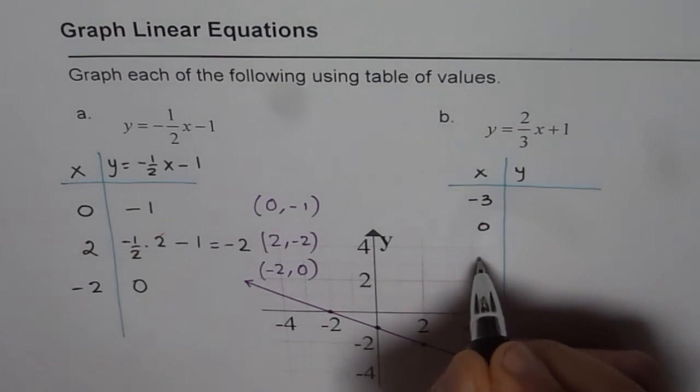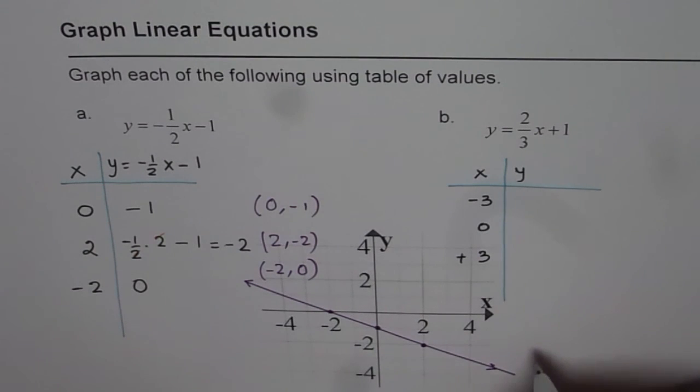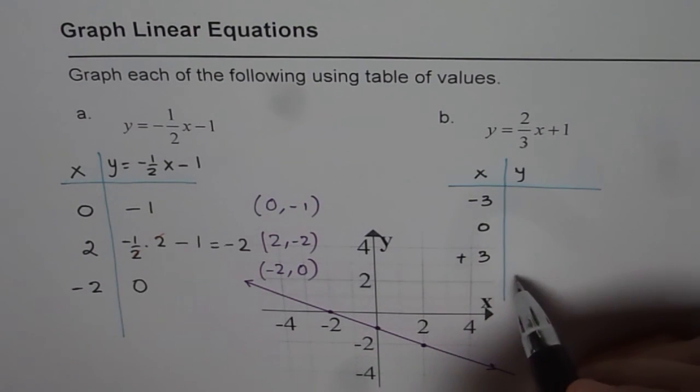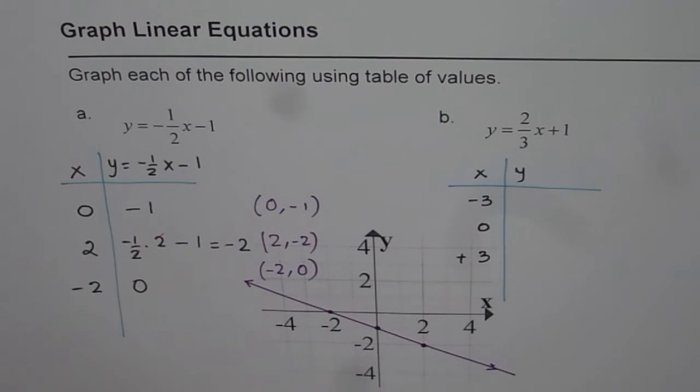So, minus 3 and plus 3 are good values to choose. So, make a table and then plot your points on the graph to get the graph of this linear equation.